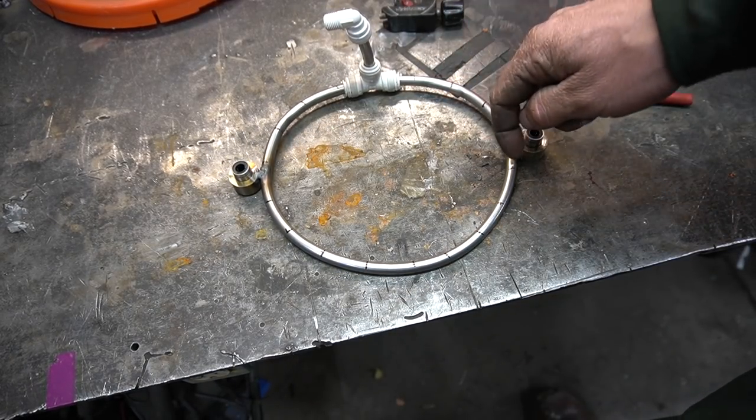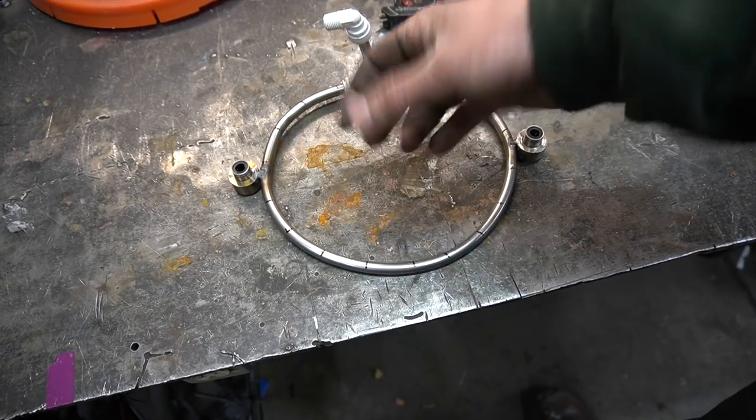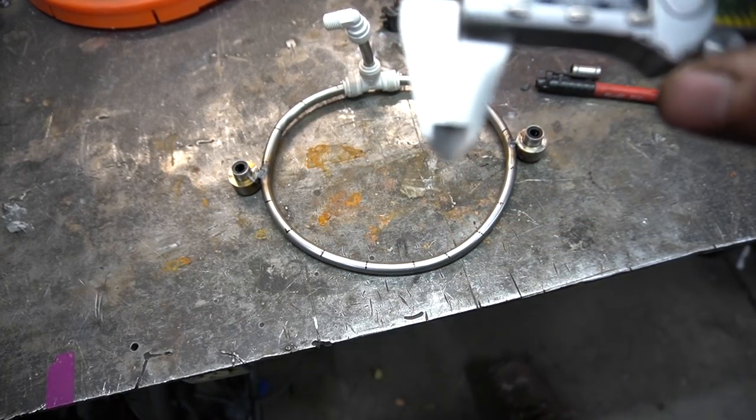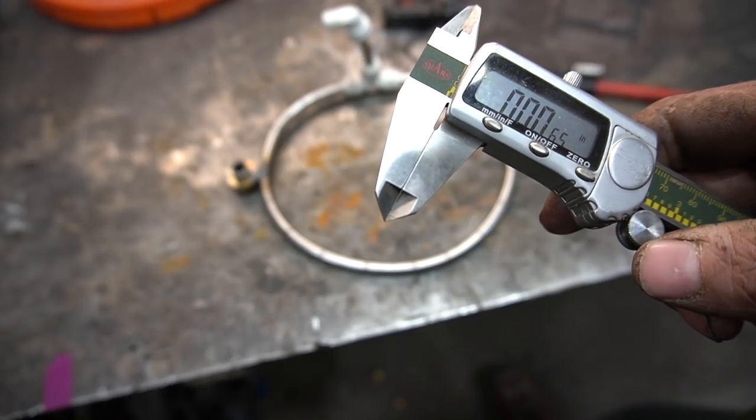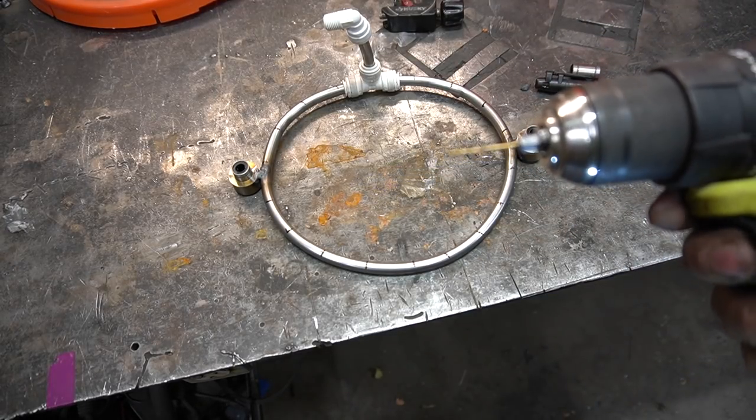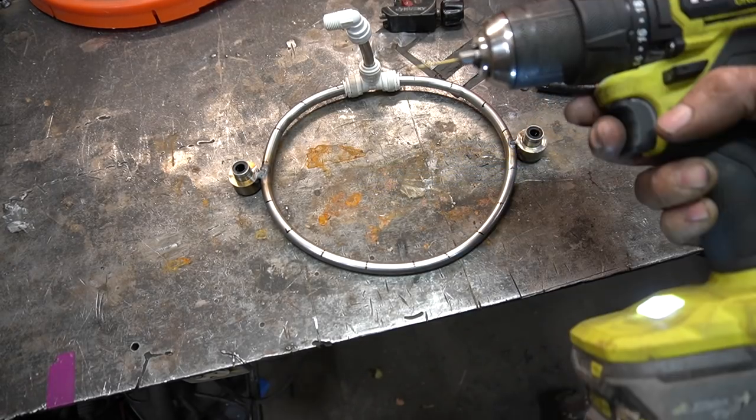And ideally, the area of these holes all added together will equal the area of this. But I did the math for that. And I'm gonna need a drill bit this small. I don't have that. So I'm just gonna use the smallest drill bit I got. Which is this guy. And hope it's okay.